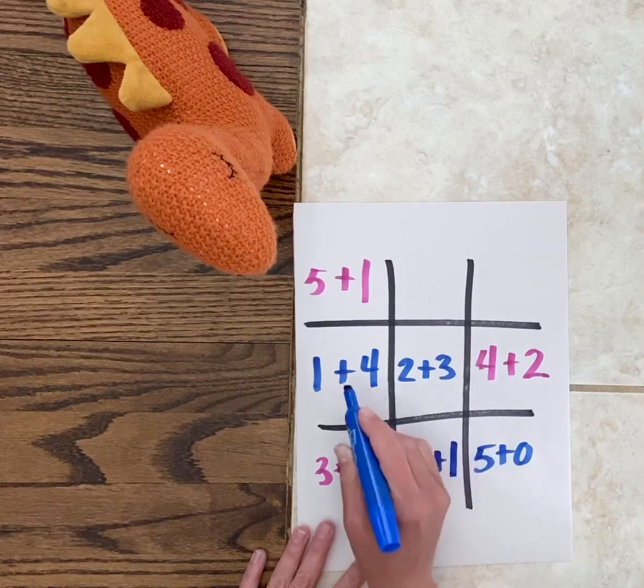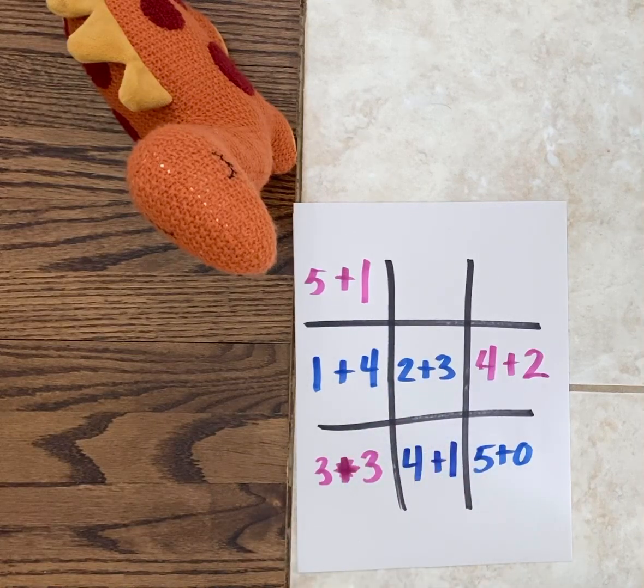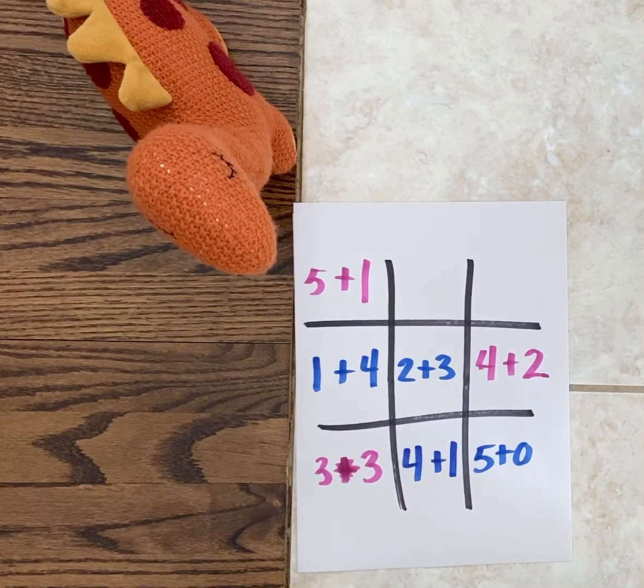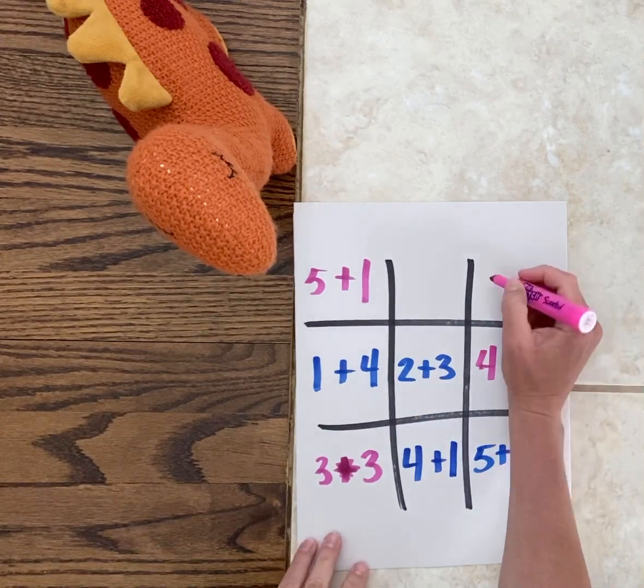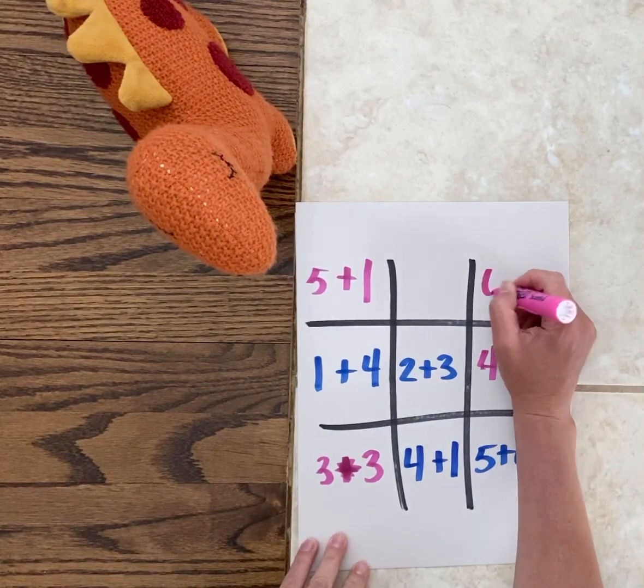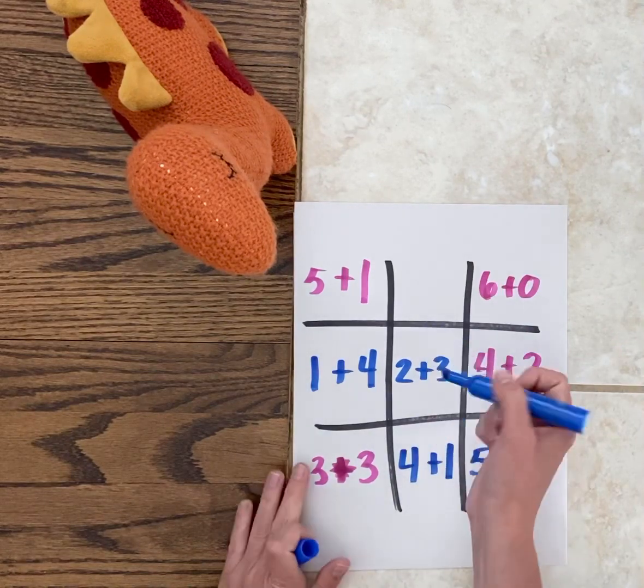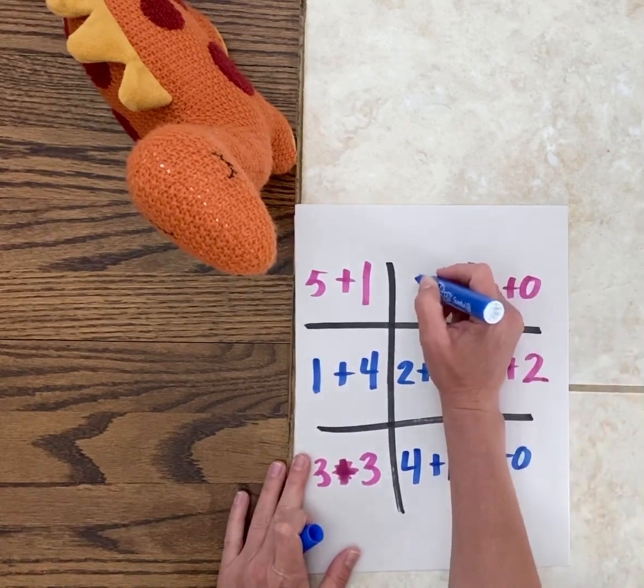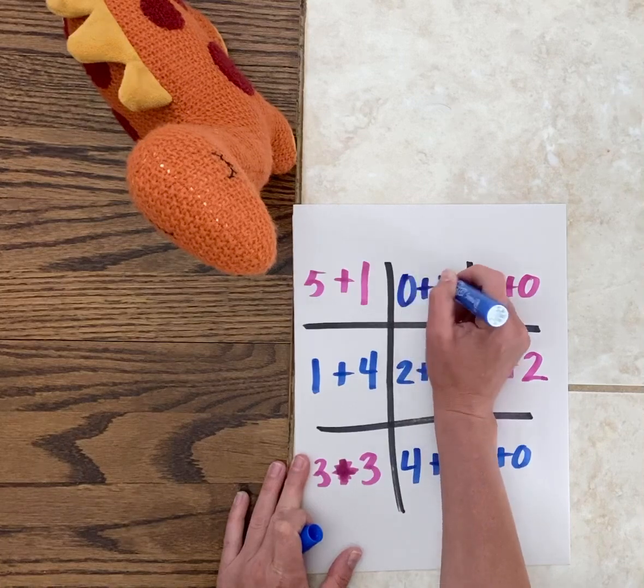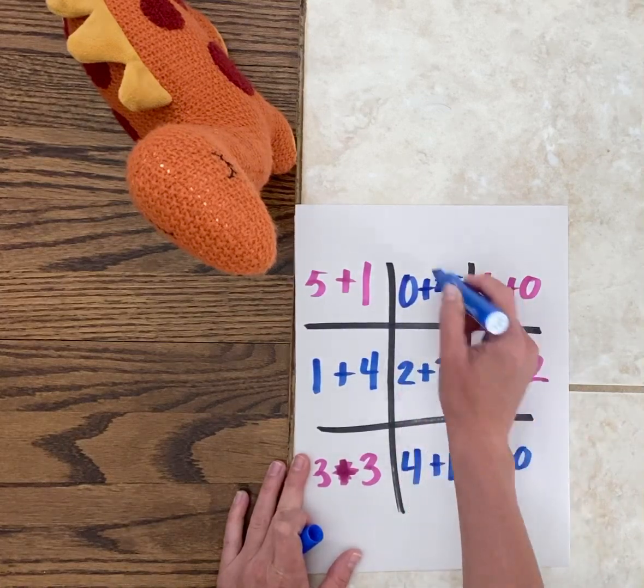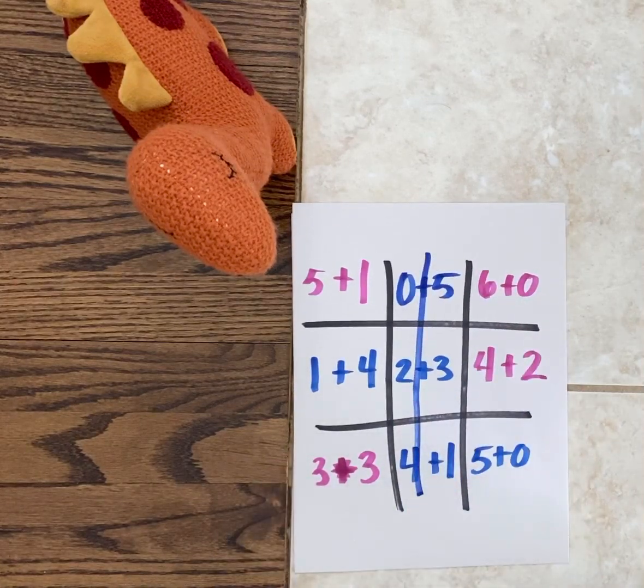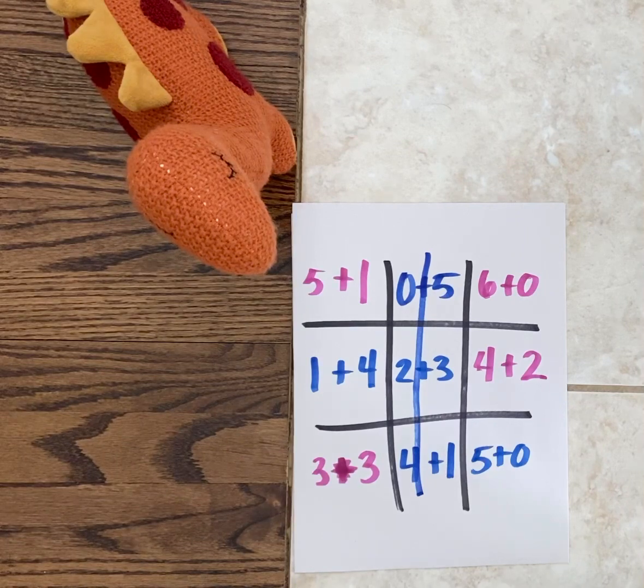Let's say that dinosaur goes here and does six plus zero to get six. Oops, and dinosaur missed blocking me, so I can come up with one more five fact. I could flip the five plus zero and do zero plus five. I end up with tic-tac-toe, three in a row.